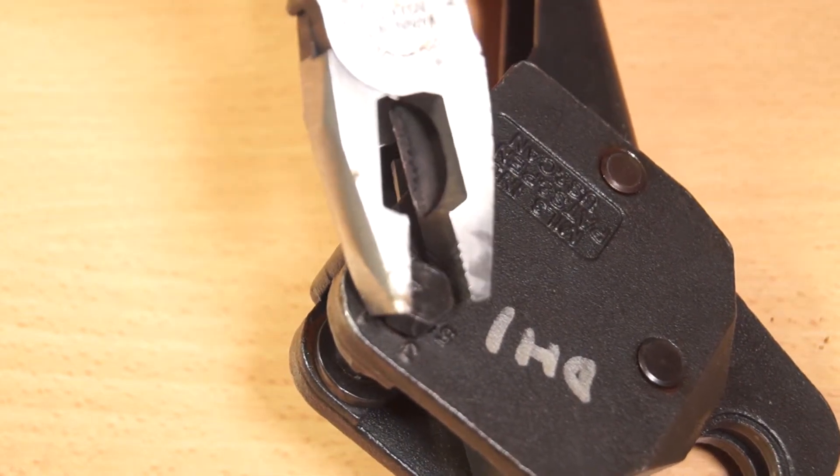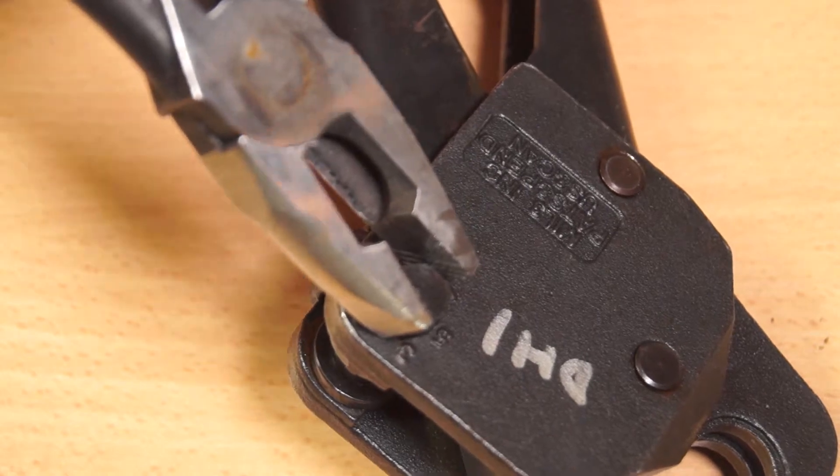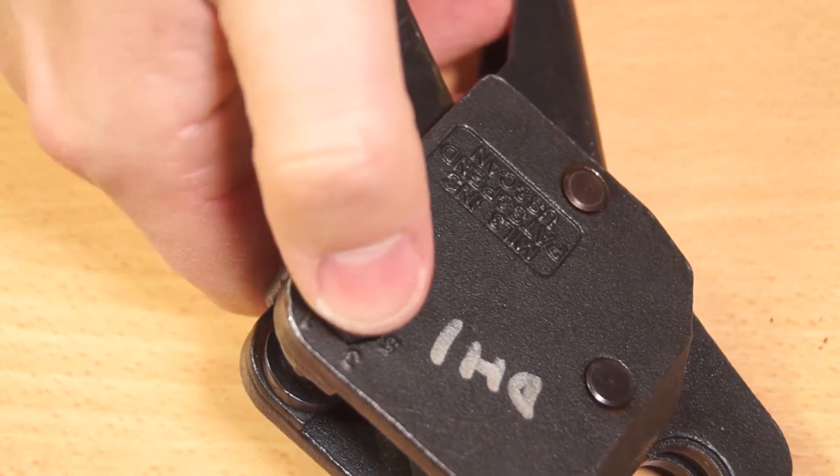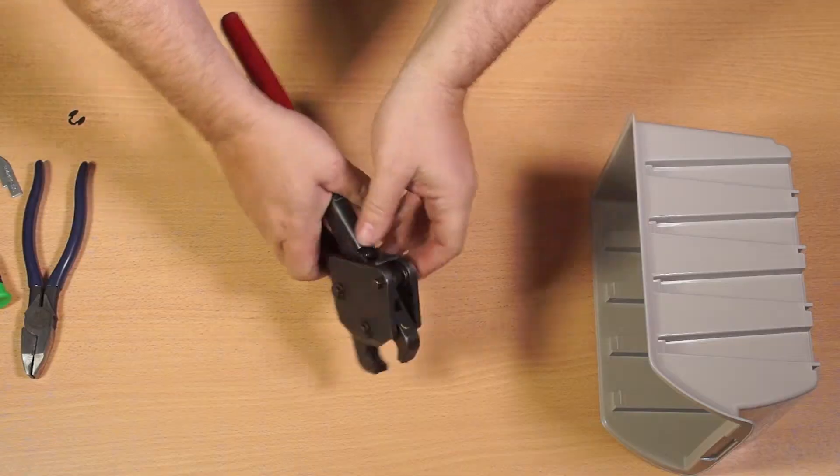Rotate the adjustment pin until the line on the hex head points to the next highest number on the tool body. Push the pin back in and replace the E-clip.